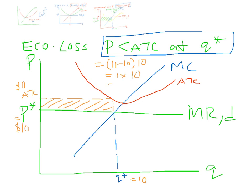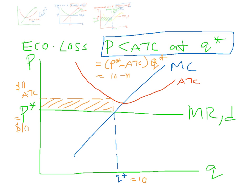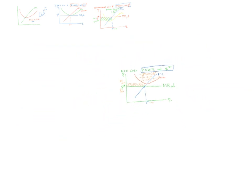Economic loss is going to be equal to (11 minus 10) times 10 — that's 1 times 10 — so this firm is making an economic loss of $10. You should write it as: P-star minus ATC multiplied by Q-star. So (10 minus 11) times 10 equals minus $10 — an economic loss of $10. That's really how you should have done it.